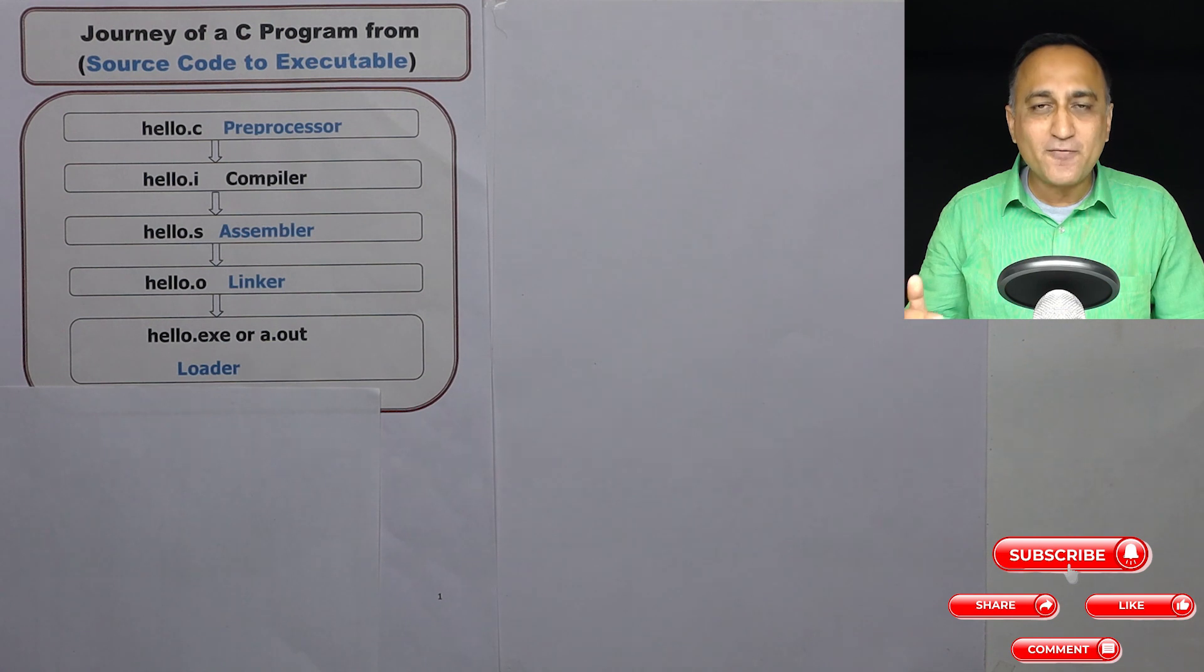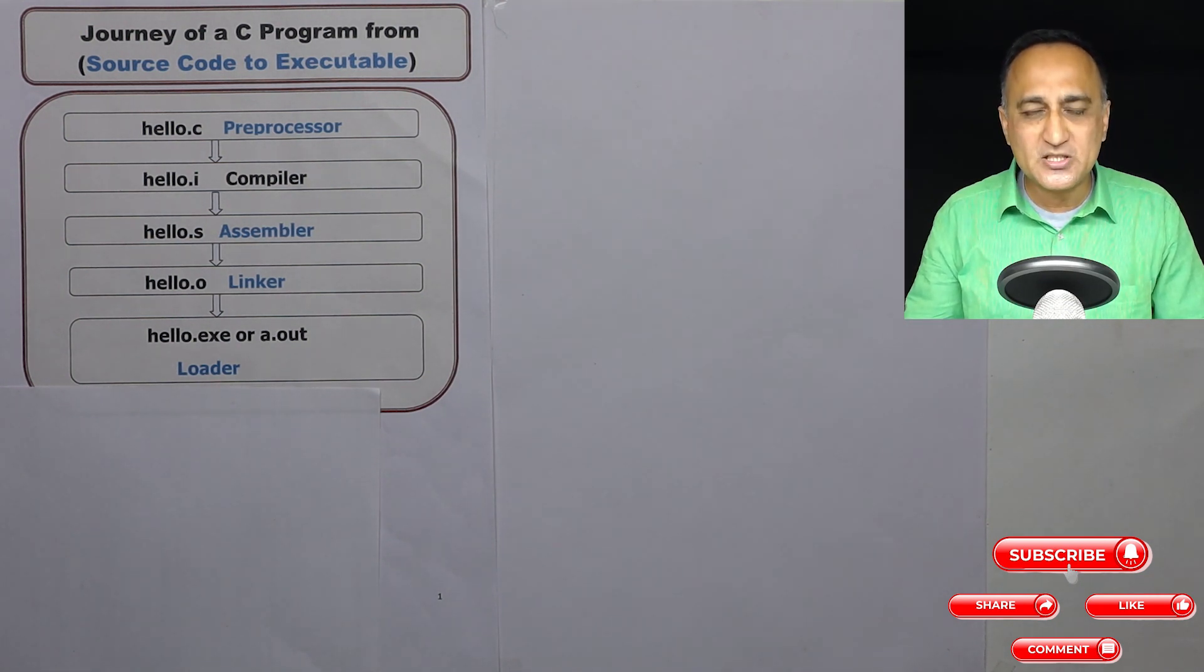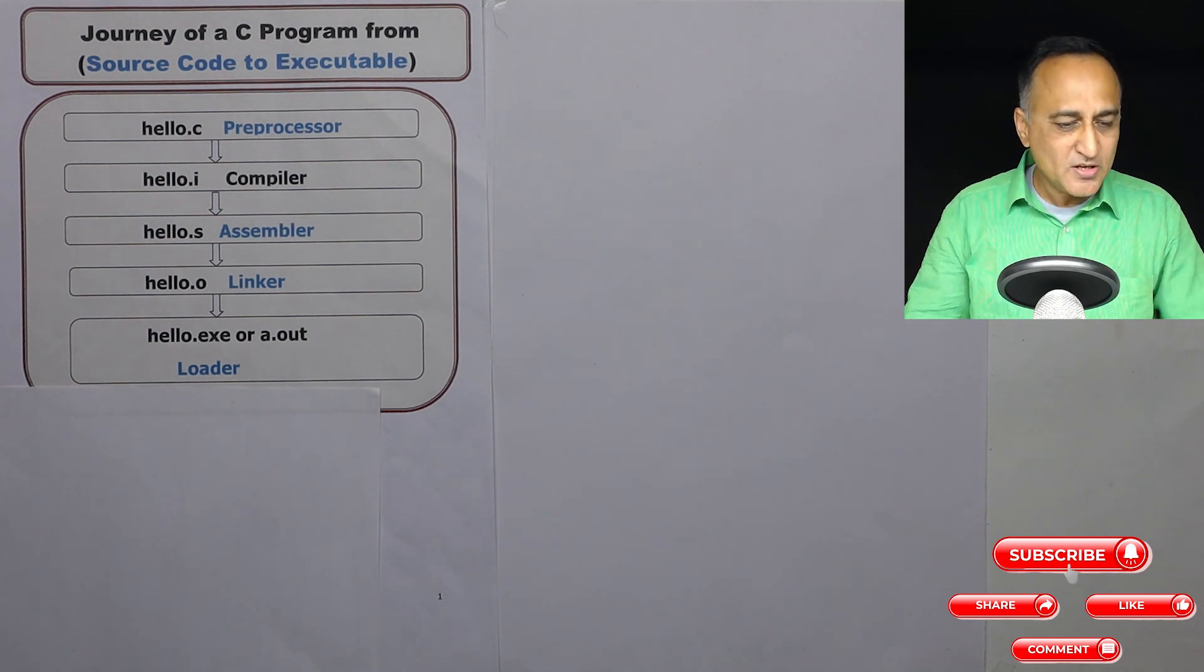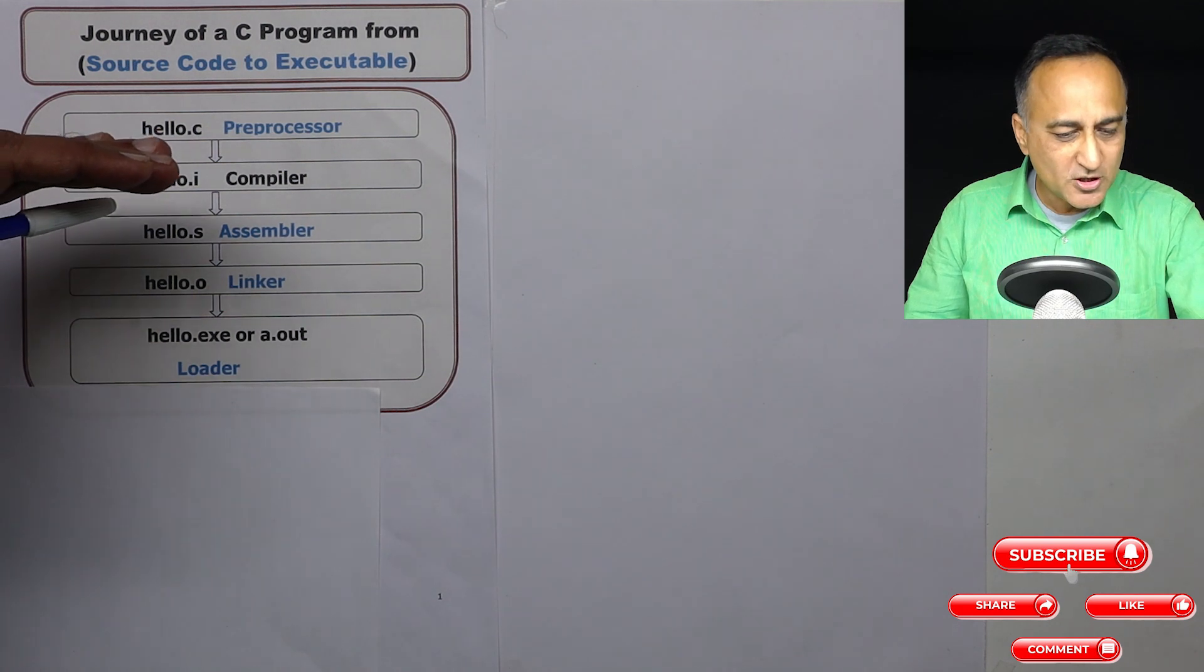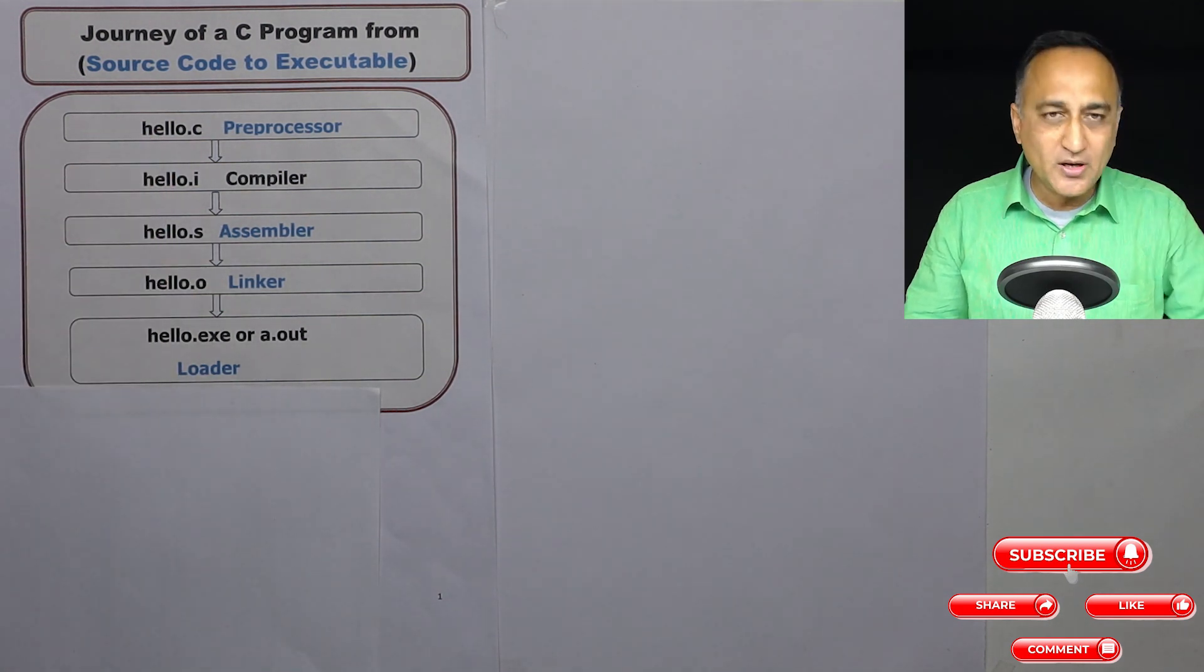Now at this stage your file from the secondary memory is ready to be loaded onto the main memory. This is where the loader comes into picture. The loader takes your hello.exe or a.out and pushes it onto main memory. From the main memory the control is transferred over to the CPU for starting execution from the first instruction. So this gives you an idea of the journey of the C program from typing it into the notepad all the way onto execution.